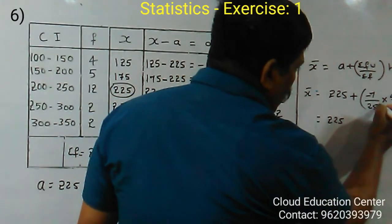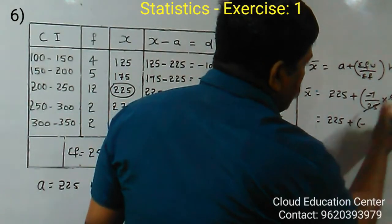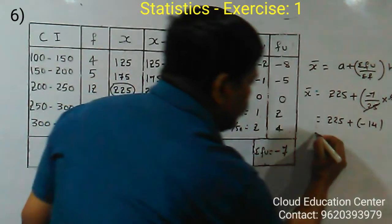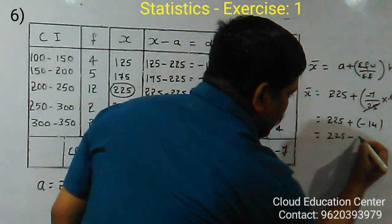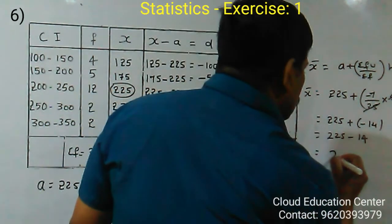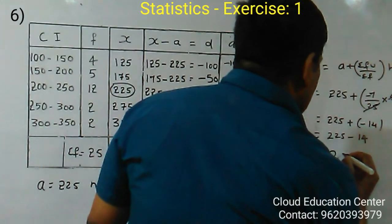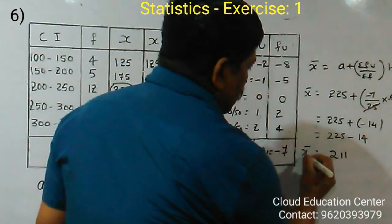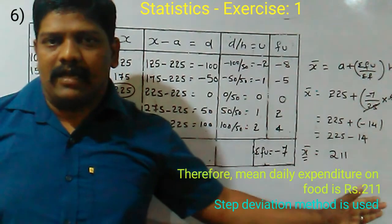Now it is 225. 25 by 1s are 25, 2s are 50. It is minus 14. 7 2s are 14. Here 25 into minus is minus 14. What is the mean? It is nothing but 211. So 211. The mean value is 211. It is your answer.